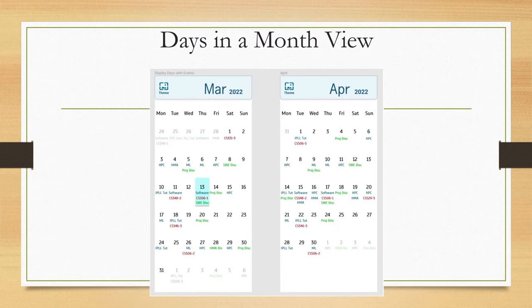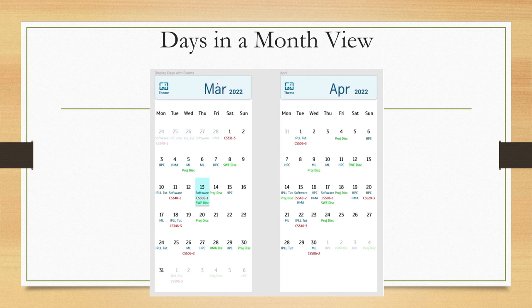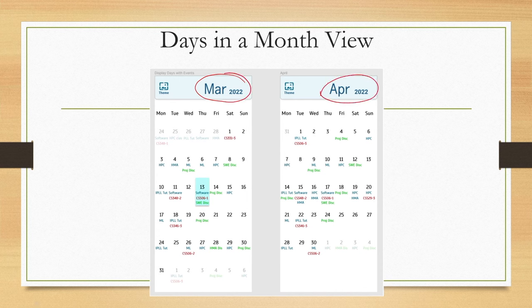Next, if we want to see the days in a month, the earlier view showed dates in a very small form. We can enlarge it to get a view like this. For example, March 2022 starts from a Saturday and runs to the 31st, with days of the week shown — Monday through Sunday.